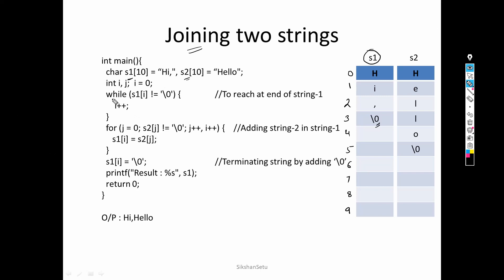Here you can see I have used a while loop with the condition: s1[i] is not equal to null. Why null? Because null specifies whether we have reached the end of the string, since null character indicates the end of a string. We start with i = 0, so our pointer is at the first location, and we traverse one character at a time, repeating until we encounter the null character.